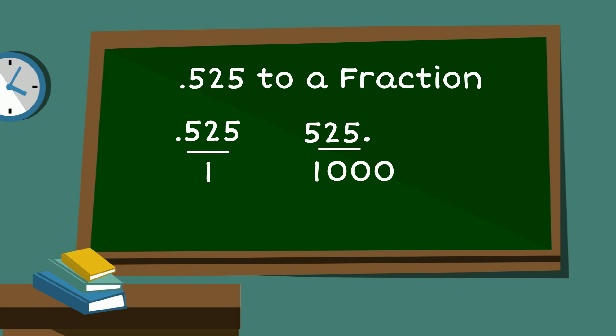Now, let's reduce the fraction. I know that both numbers are divisible by 25, so 525 divided by 25 is 21, and 1,000 divided by 25 is 40.